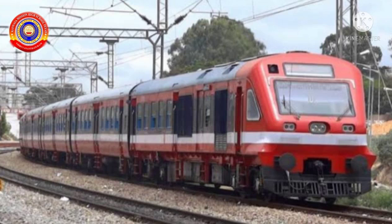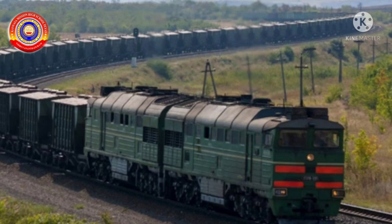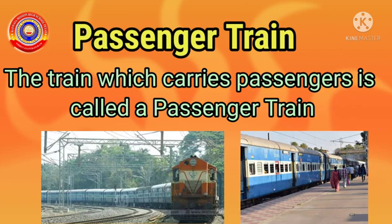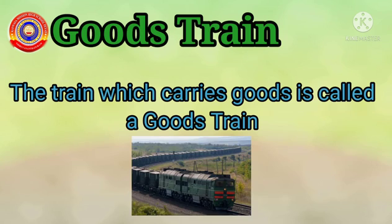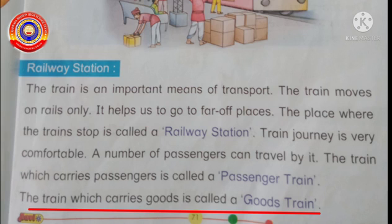Two types of trains are there: passenger train and goods train. The train which carries passengers is called a passenger train. The train which carries goods is called a goods train. Goods means things which are carried from one place to another.